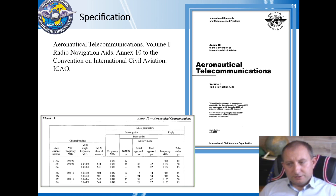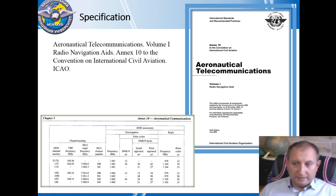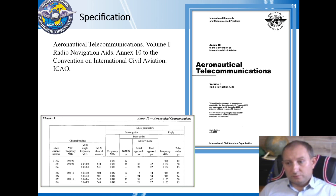Specifications for distance measuring equipment operation can be found in Annex 10 to the Convention on International Civil Aviation Organization — Aeronautical Telecommunication, Volume 1: Radio Navigational Aids. This document also contains the channel list for DME, VOR, and ILS.